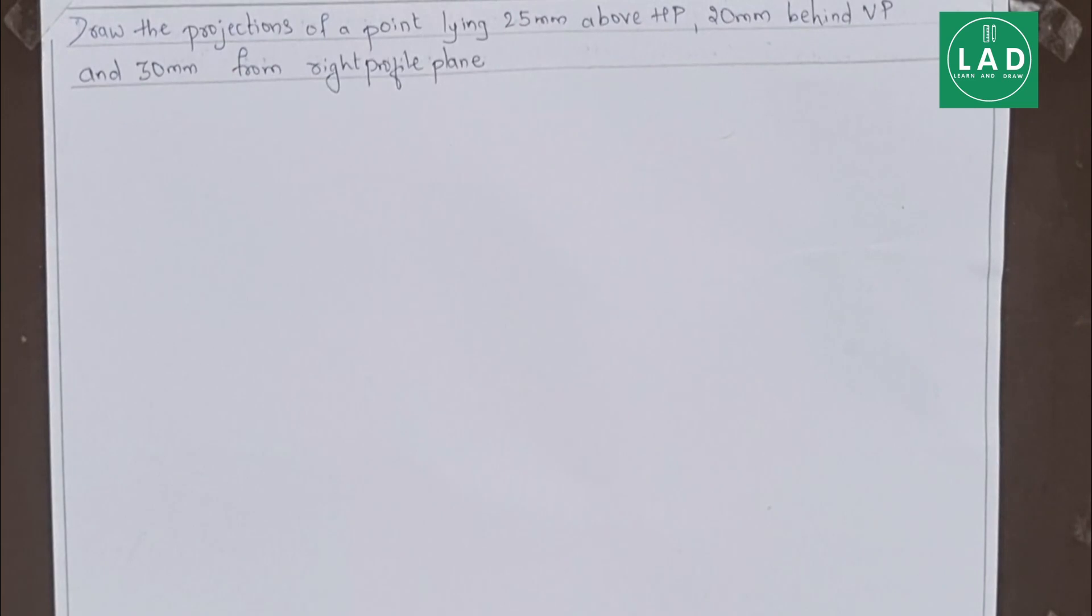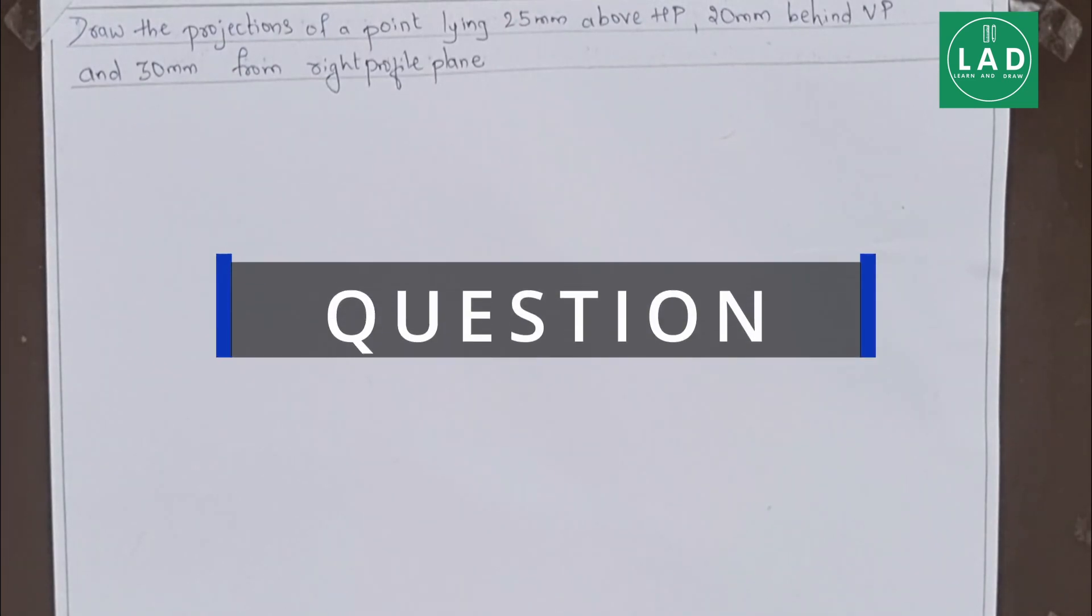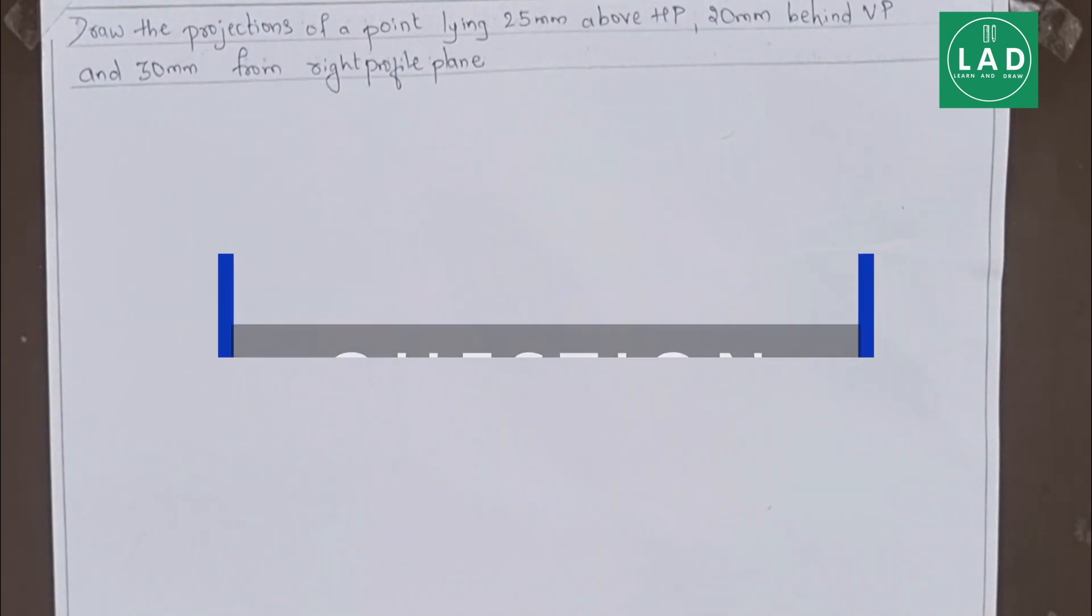Let's read the question. Draw the projection of a point lying 25mm above HP, 20mm behind VP and 30mm from right profile plane.